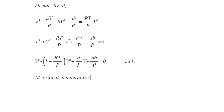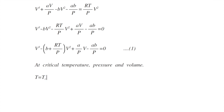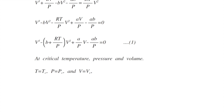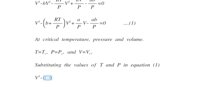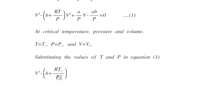At critical temperature, pressure, and volume, T becomes Tc, p becomes Pc, and v becomes Vc. Substituting the values of T and p in equation 1, we get v³ - (b + RTc/Pc)v² + (a/Pc)v - ab/Pc = 0. This is equation 2.